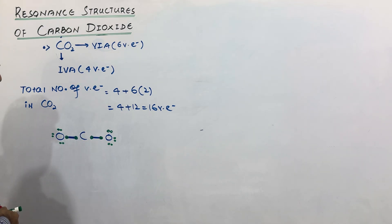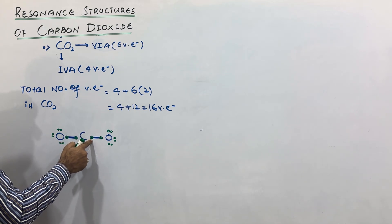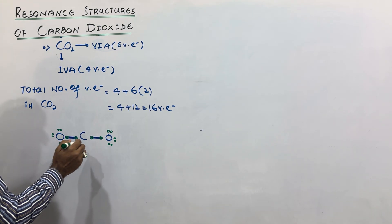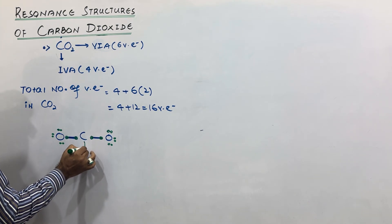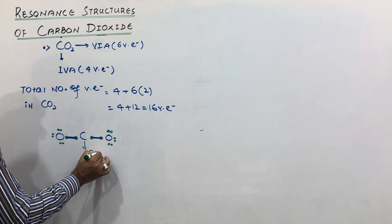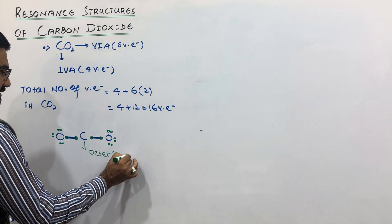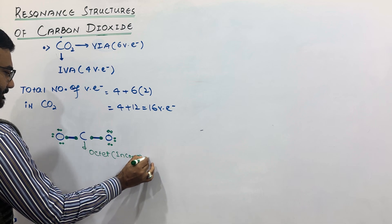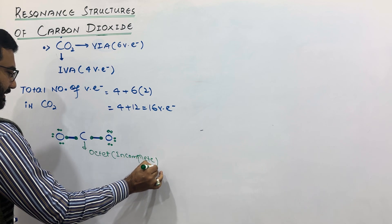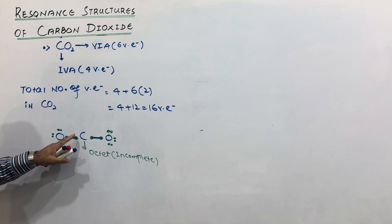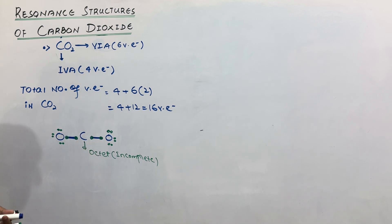Now let us check the octet of carbon. Carbon has one, two, three, four — it has only four electrons in the form of two bond pairs. So the octet of carbon is incomplete, as there are only four electrons in the valence shell of carbon according to this Lewis structure.